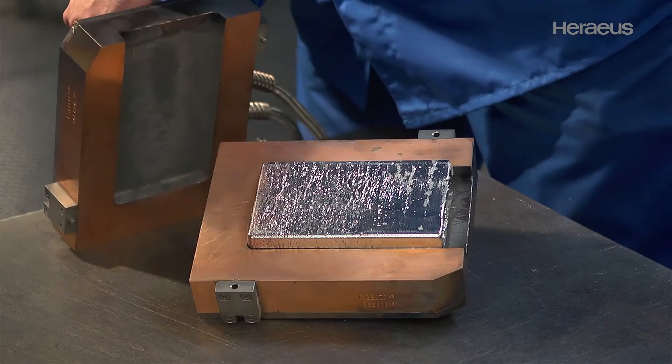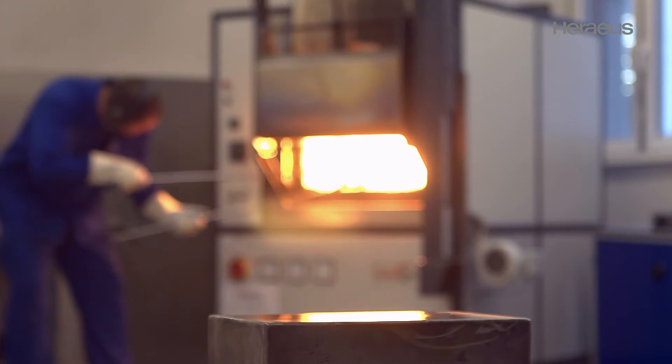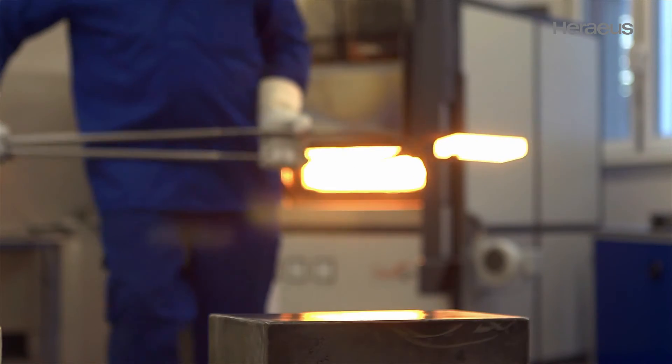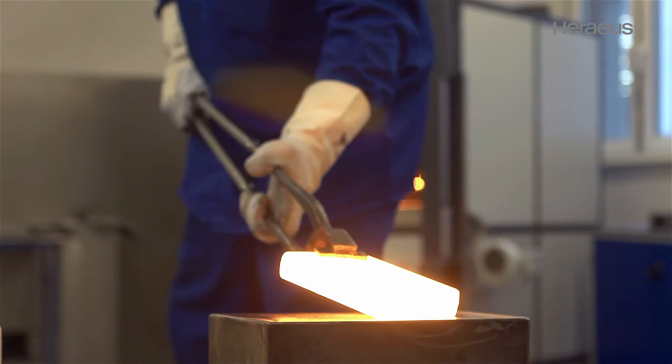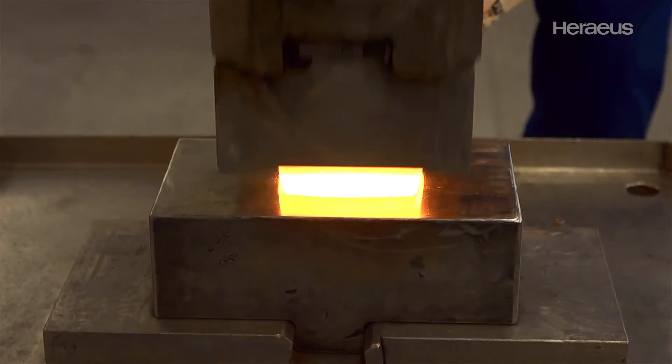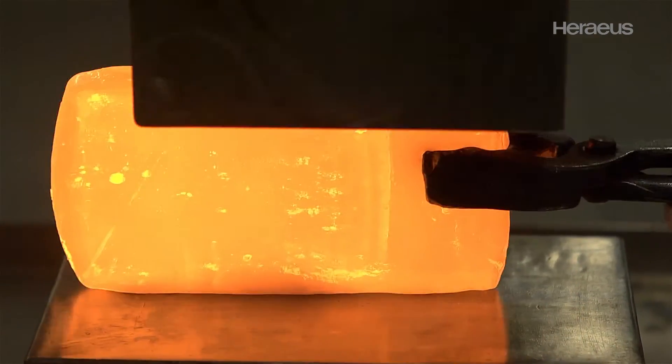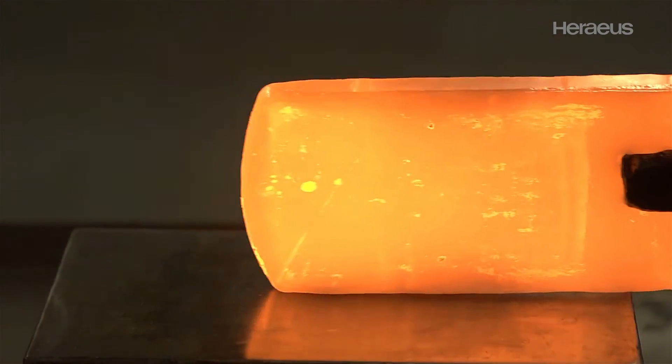The cast bar is subjected to a production process with an optimized combination of forming and annealing steps, to ensure that the brittle as-cast structure is broken down and optimal properties for the application are achieved.